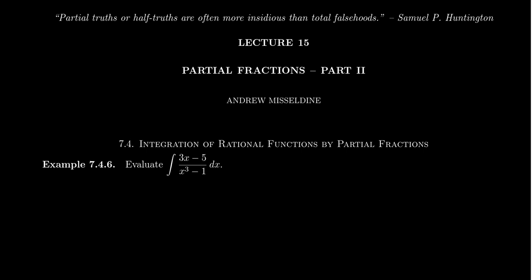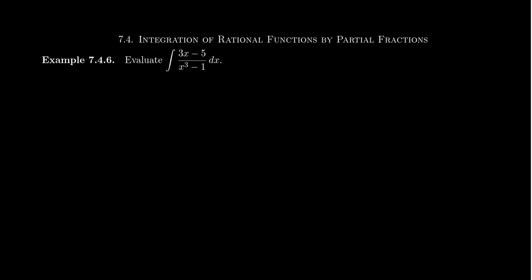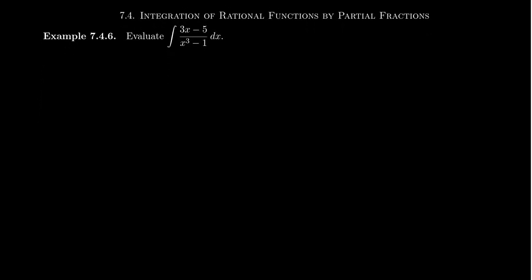In this lecture, we're going to look at some more insidious examples of partial fraction decompositions. What I mean by that is we're going to take what seems like a very, very tame antiderivative. Let's try to calculate the antiderivative of (3x - 5) over (x³ - 1) with respect to x. This one doesn't seem so bad at first — it is a proper fraction. The top, which is linear, is less than the cubic on the bottom.